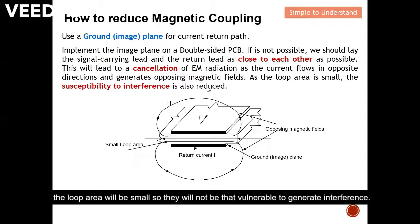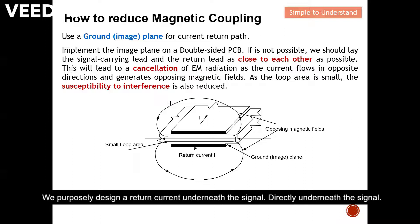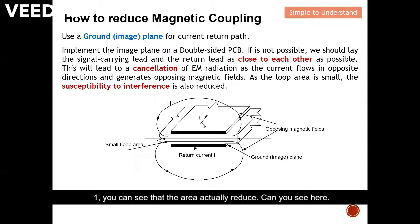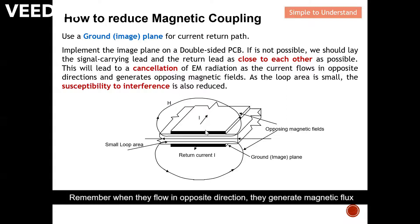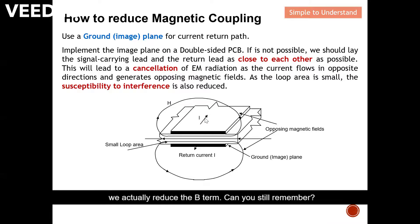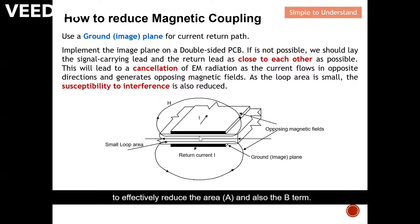This is the signal on top of the PCB board. We purposely design a return current path directly underneath the signal. When we do this there are two motivations: first, you can see that the area actually reduces. Second, the current flows up in the signal trace and the return current flows down directly beneath it, so they flow in opposite directions. When they flow in opposite directions they generate magnetic flux that cancels each other, and when they cancel each other we reduce B. That's why it is very essential to implement a ground plane — to effectively reduce the area and also reduce B.